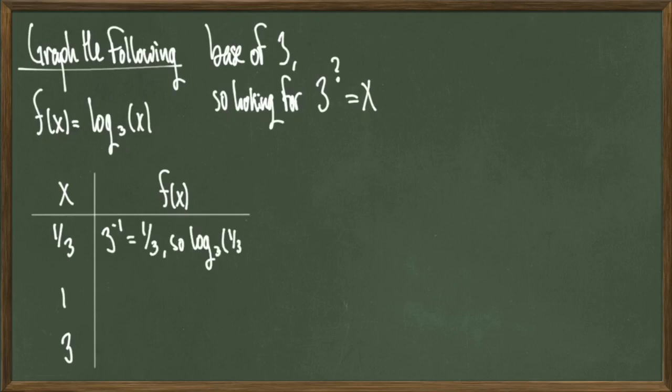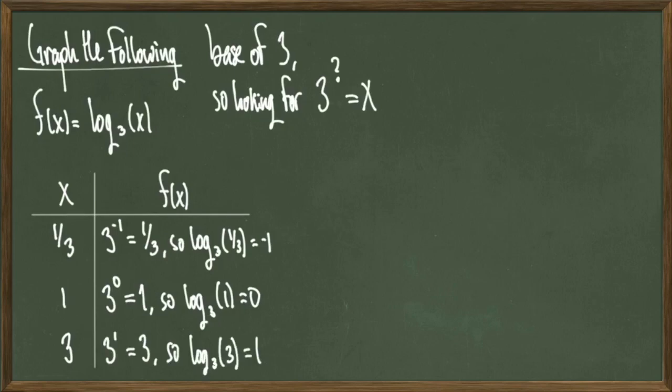Starting with 1/3, I notice that 3^(-1) = 1/3, so log base 3 of 1/3 equals -1. If this concept is still kind of confusing, make sure to go back to the first slide and study that information, or try plugging this into a calculator. Running through the other computations, I notice that 3^0 = 1, so log base 3 of 1 = 0, and 3^1 = 3, so log base 3 of 3 = 1.